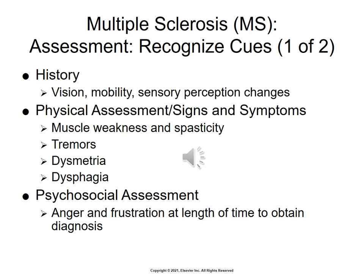In general, fatigue is common, associated with constant sensitivity to temperature. Dysarthria is also common with slurred speech. Nystagmus is that rapid or jerking involuntary movement of the eye. Dysmetria is the inability to control the distance, speed, and range of motion necessary to perform smoothly coordinated movements. Dysphagia is difficulty swallowing, and there is also bowel and bladder dysfunction.